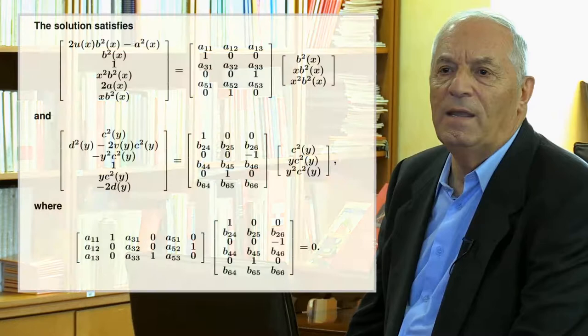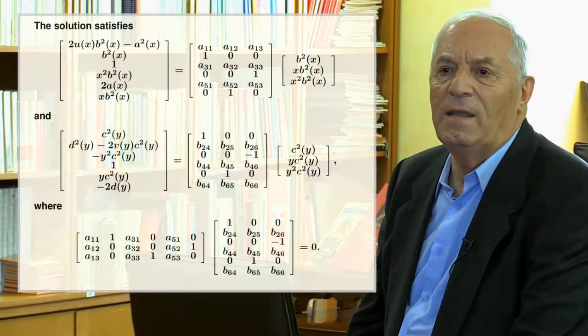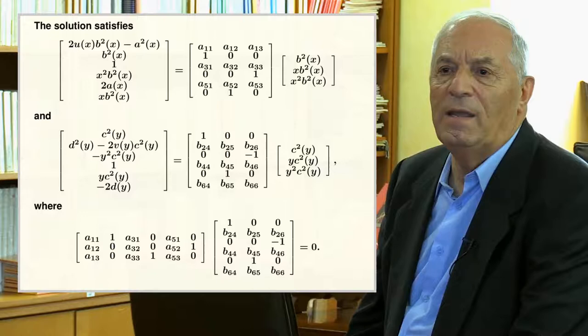This is our sum of products functional equation with six terms. To solve it, we apply the theorem as we did with the polynomial cross-section cover example. We obtain the six functions of x and six functions of y, write them as column matrices, identify three linearly independent functions of x and three of y, and write them as the basic column matrices. We then build the intermediate matrices where we identify two 3x3 matrices with coefficients 1, minus 1, and 0, and unknowns denoted a and b.